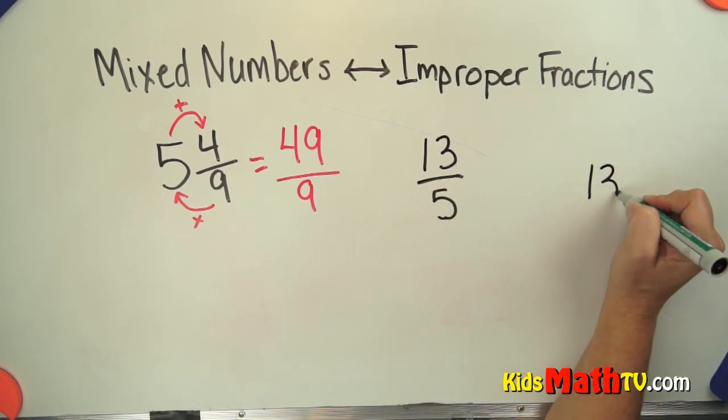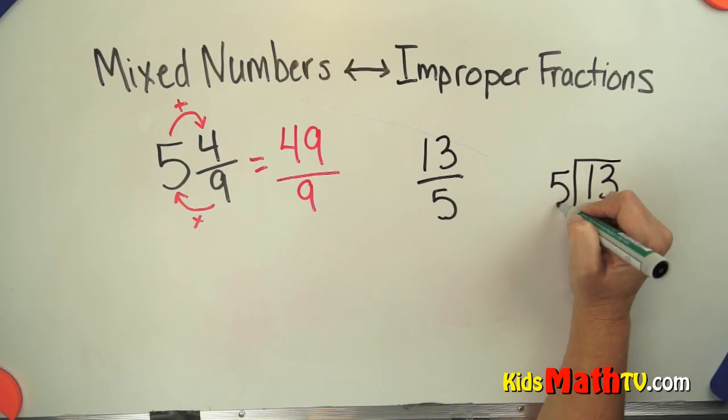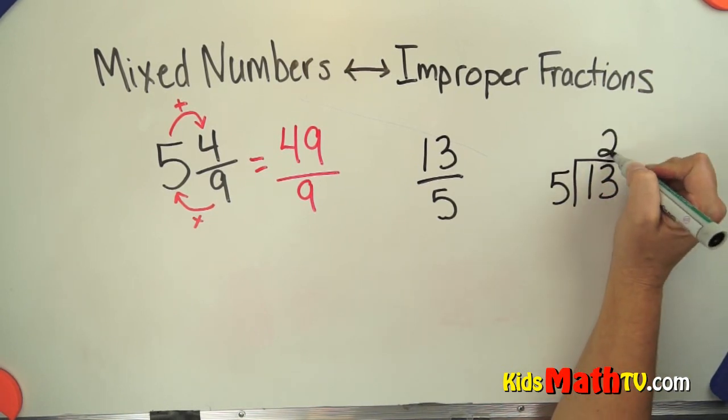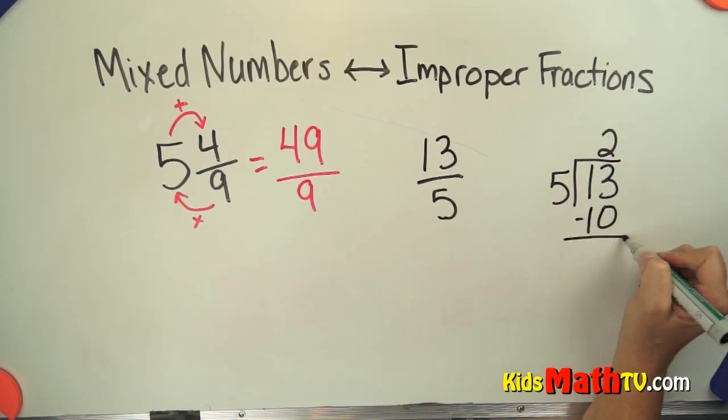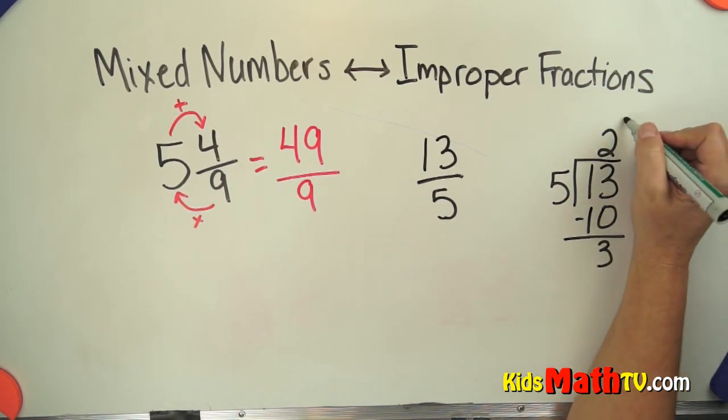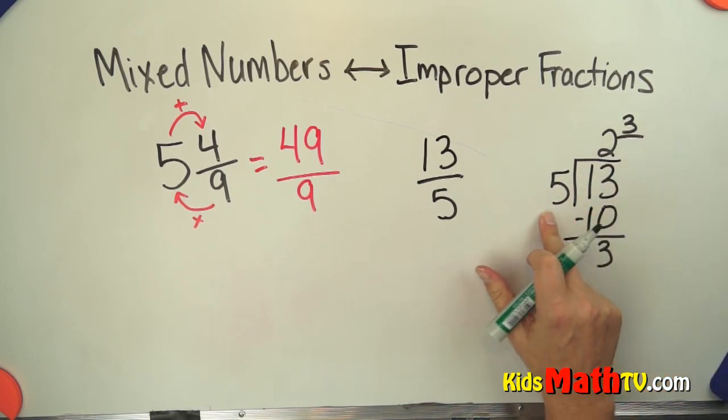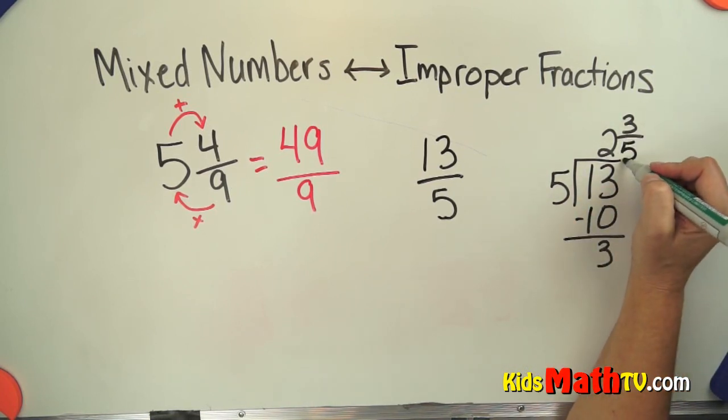So I do the division 13 divided by 5 and that's 2. Multiply and subtract. My remainder becomes the numerator. The divisor is the denominator.